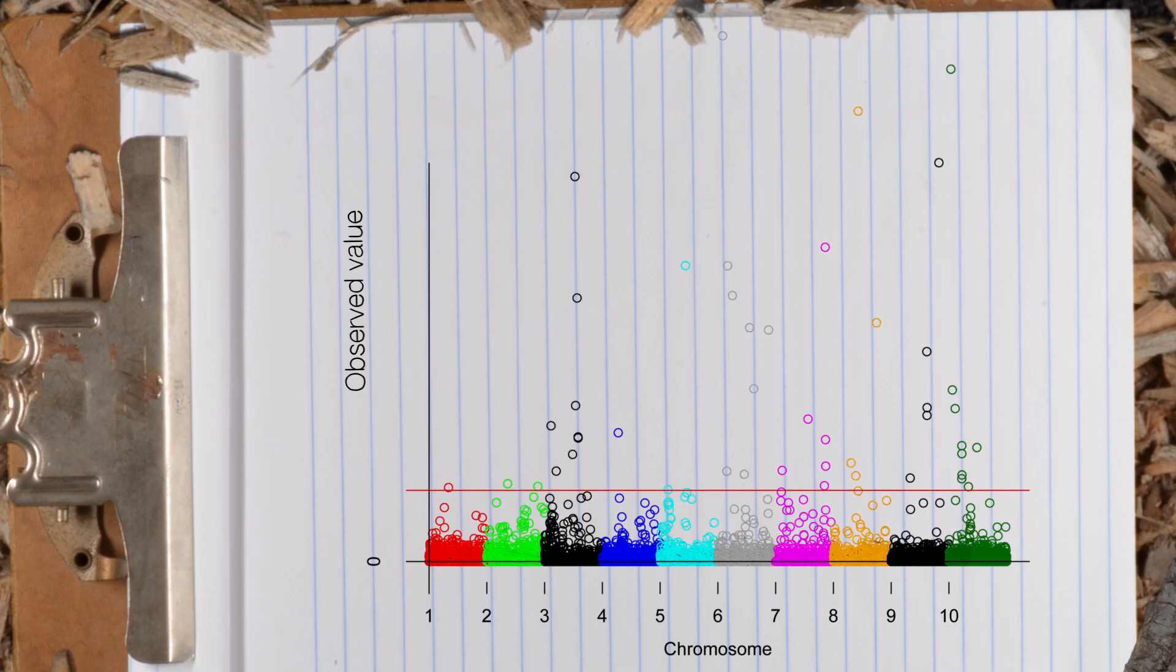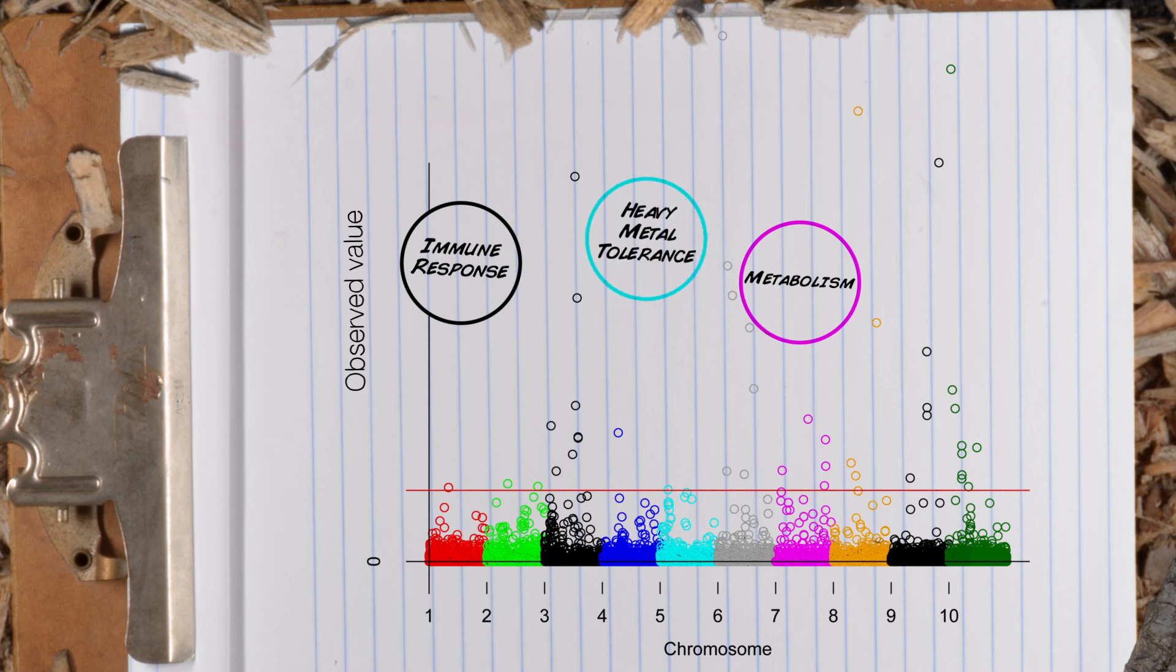And these genes encode for things like immune response to disease, so there might be more disease in very dense urban populations, metabolism, how the mice use energy, and heavy metal tolerance. You guys could probably predict that New York City soils are pretty contaminated with lead and chromium and that sort of thing.